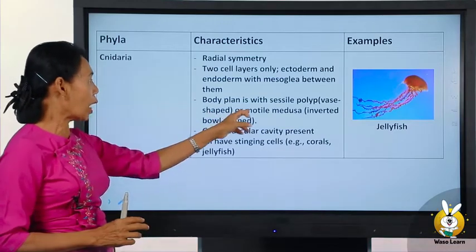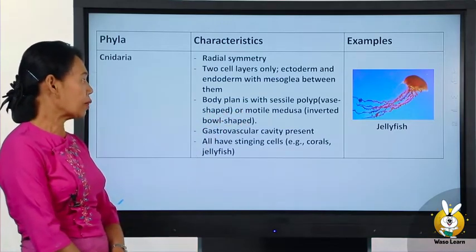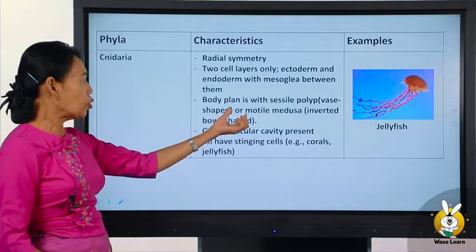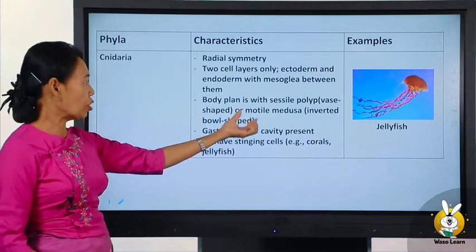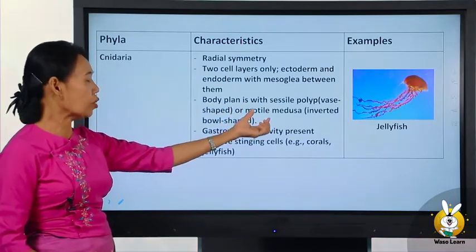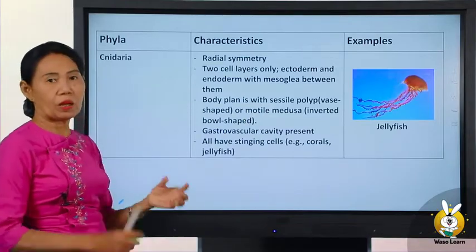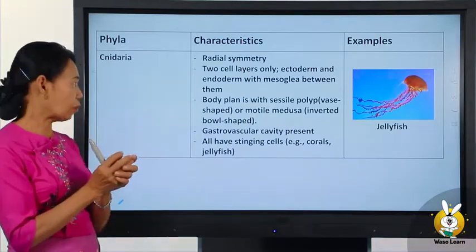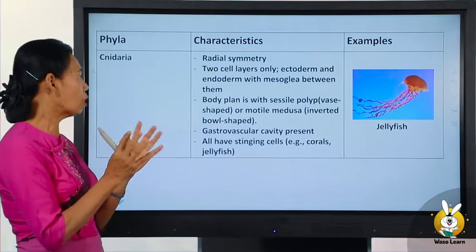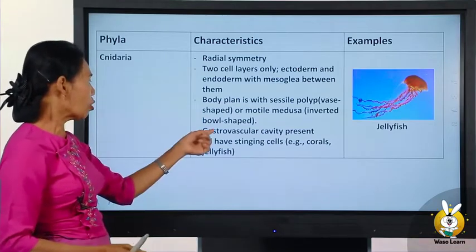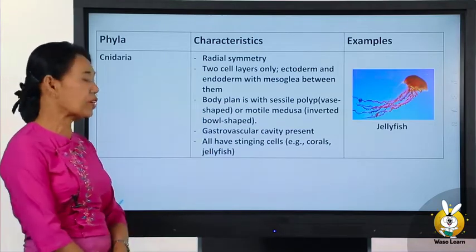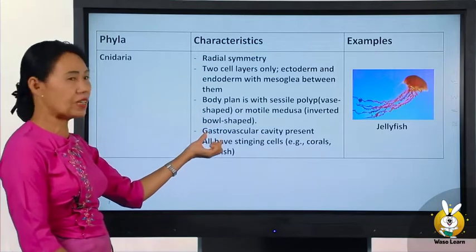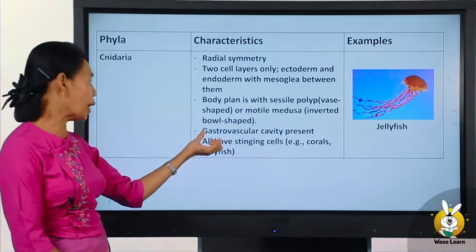Cnidarians exist in two body forms: the polyp form and the medusa form. The medusa is an inverted bowl shape. A gastrovascular cavity is present.